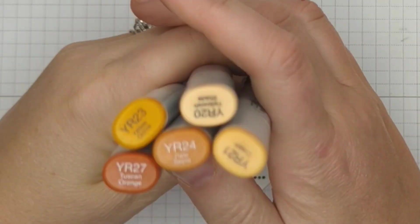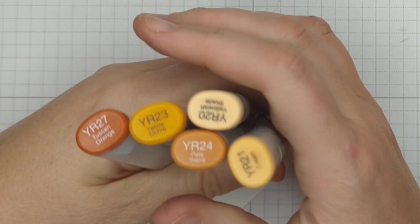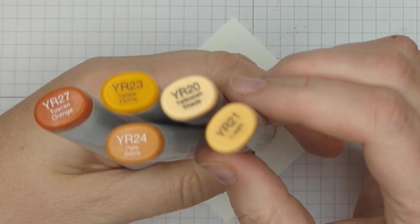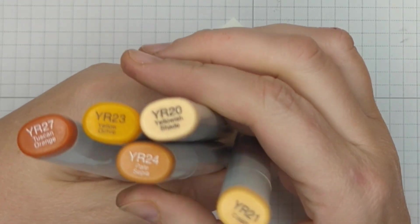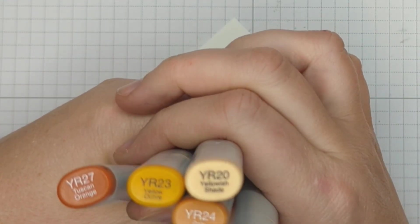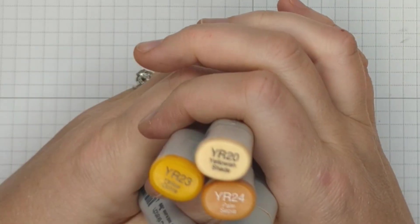Okay. To color this up, I'm going to only need one series of markers here. I'm going to use my YR two, zero, two, one, two, three, two, four. And I brought down my two seven in case I needed it, but I don't think we're going to today.